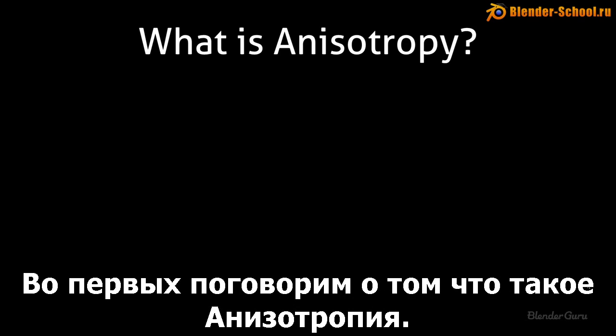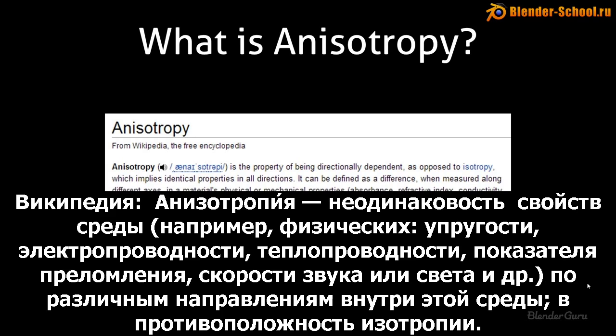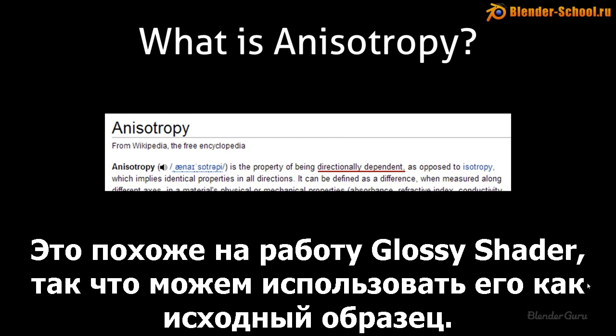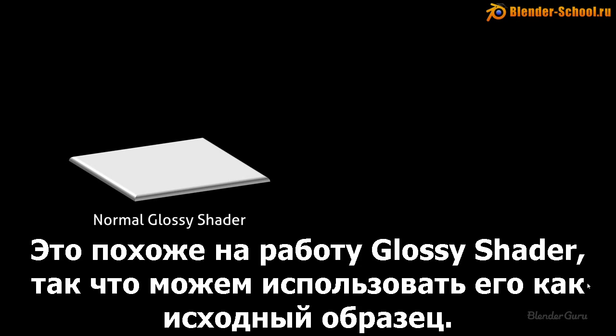First things first, let's talk about what anisotropy is. According to Wikipedia, anisotropy is the property of being directionally dependent, as opposed to isotropy, which implies identical properties in all directions. Now that sounds very complex, but essentially it is similar to how a glossy shader will work, so we can use that as a starting example.